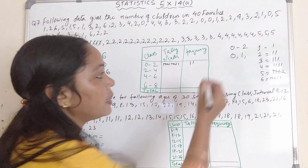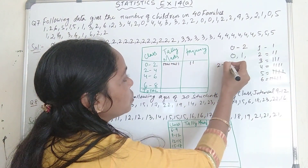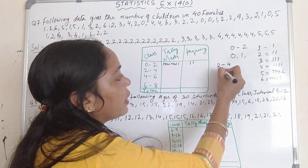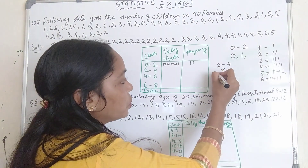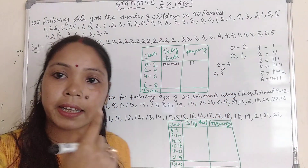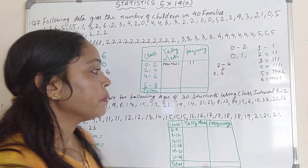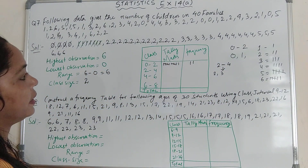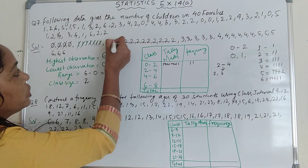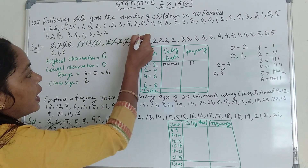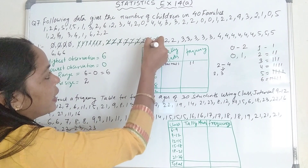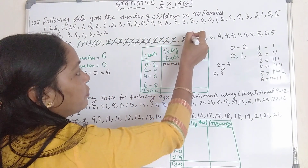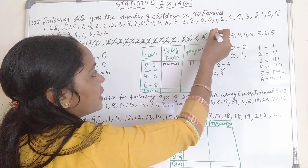Now come to the second interval, 2 to 4. Here we include the numbers 2 and 3, excluding 4. Let's count the 2s and 3s: 1, 2, 3, 4, 5, 6, 7, 8, 9, 10, 11, 12, 13, 14, 15, 16, 17. So the frequency for interval 2 to 4 is 17.